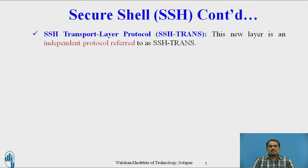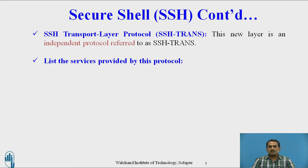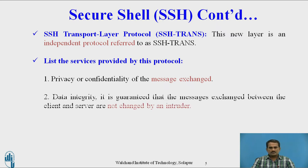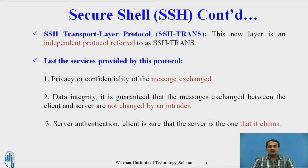The first component is the SSH transport layer protocol. It is an independent protocol referred to as SSH transport. While transmitting data, it is independent of the upper and lower layers and can directly transfer data without any help from other protocols. The services provided by this protocol include: privacy and confidentiality of the messages exchanged, and data integrity — guaranteeing that messages exchanged between the client and server are not changed by any other user. The data can reach the destination securely and confidently, providing more security than Telnet and other protocols.